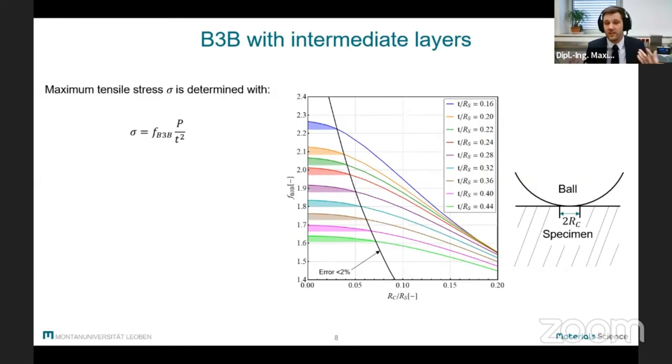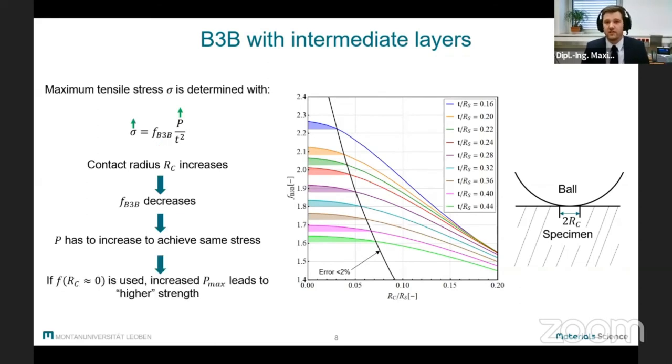So now in order to achieve the same stress, the load has to increase to compensate the decrease in f. But if we still use the factor f of an ideal pointless load when calculating fracture strength, then the increased load leads to a seemingly higher strength, which explains the observed results.